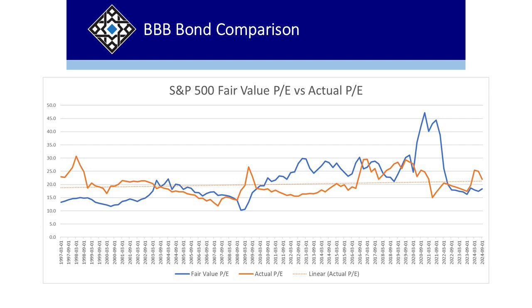We look at a lot of different things and different ways of valuing the market — using different methodologies to see what you come up with. Using our methodology, we compare the earnings yield of the S&P 500 using forward earnings — not a perfect number because forward earnings are always iffy — and we compare it to the triple-B bond yield, because the average credit rating of the S&P 500 is triple-B. Right now the market is roughly 20% overvalued. That's actually come down some because interest rates have gone up while stocks have not fallen.